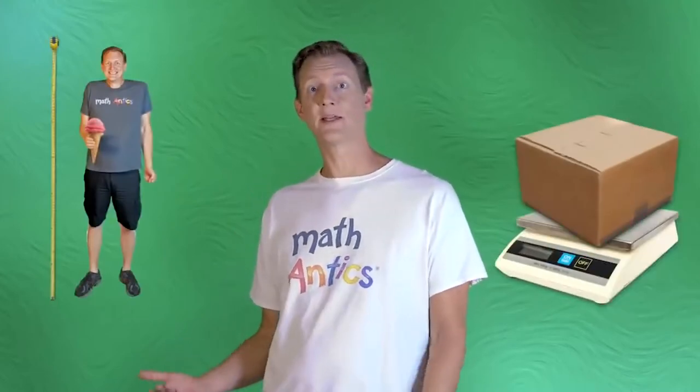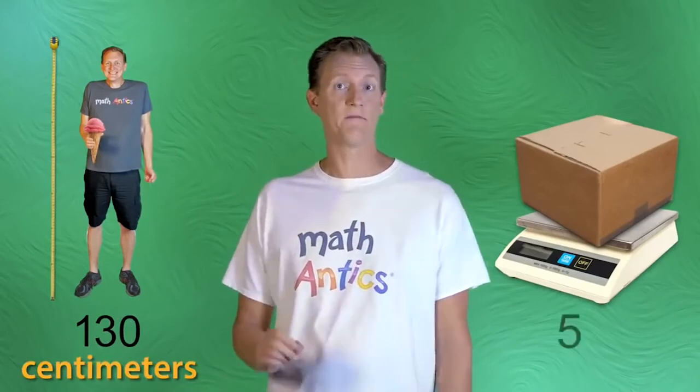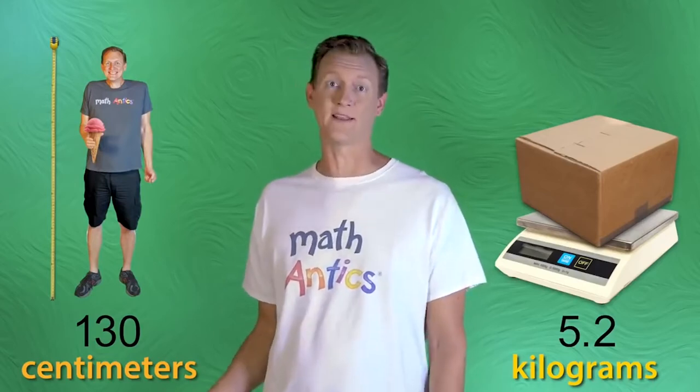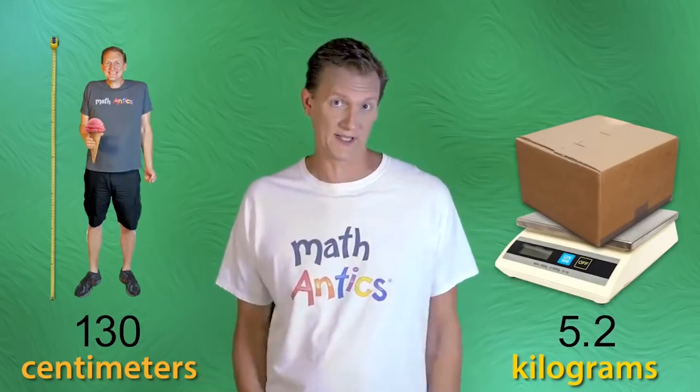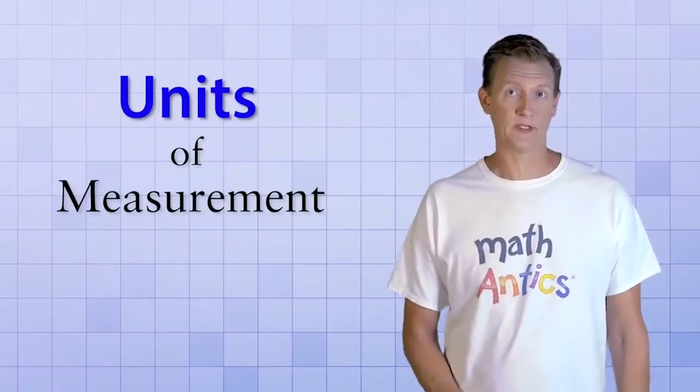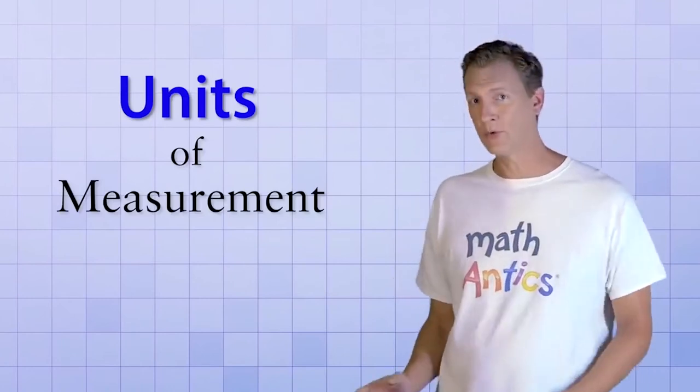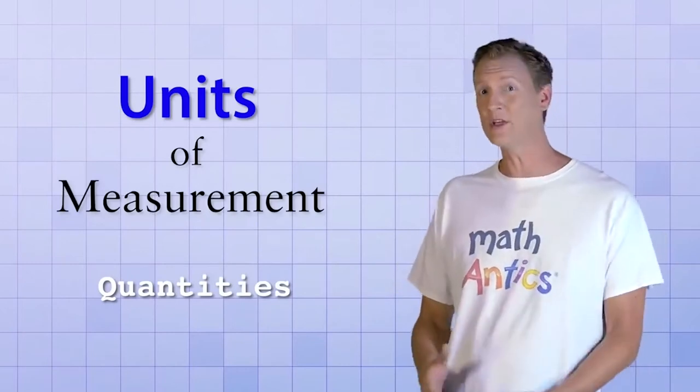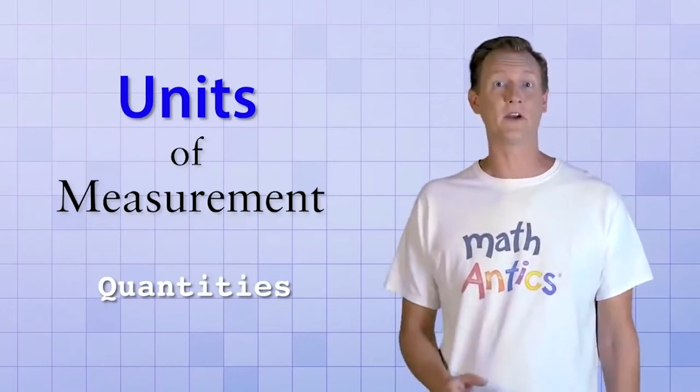Without measuring, you could say that someone is tall or short or that a package is heavy or light, but those are relative terms that don't give us very specific information. Instead, if you were to make actual measurements, you could say that someone's height is 130 centimeters or that a package weighs 5.2 kilograms. Measurements use an actual number to describe properties like that so that you can know them more precisely.